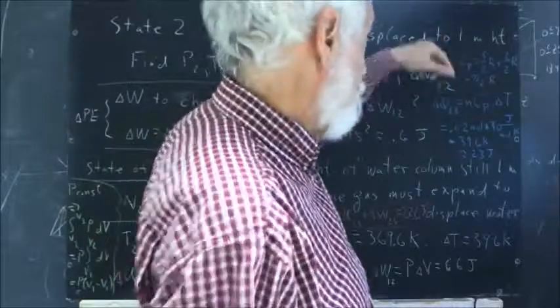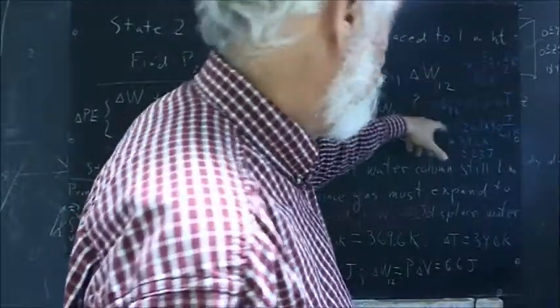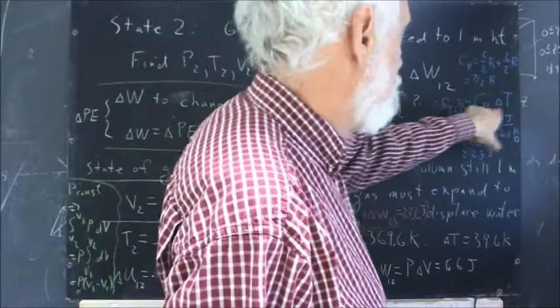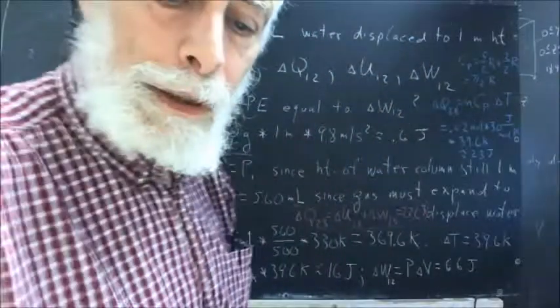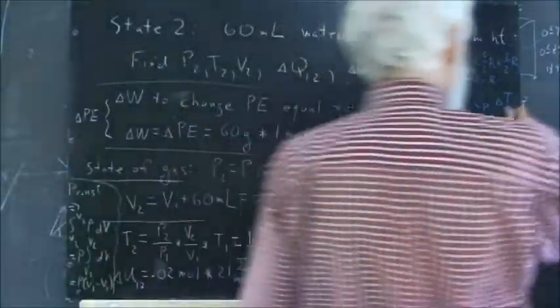Okay, now another way of calculating that would have been to use a formula. Delta Q23 is NCP delta T, and we probably ought to go delta T23.